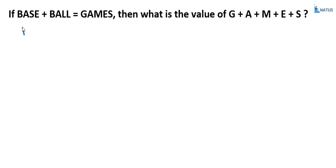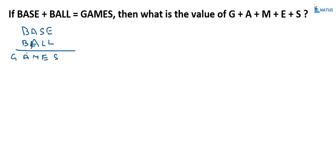Here BASE plus BALL equals GAMES. If you clearly observe, BASE is a four-digit number and BALL is also a four-digit number. If you add two four-digit numbers and the result is a five-digit number, then the leading digit G must equal 1. This is the basic rule — the values range from 0 to 9, and G is equal to 1.